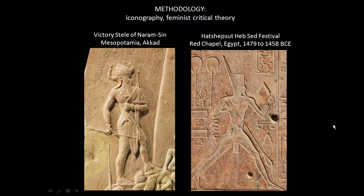We just did an iconographical analysis, looking at all these symbols communicating political power: linking political power to masculinity, linking it to being actively present in the role of king, and linking it to the military.